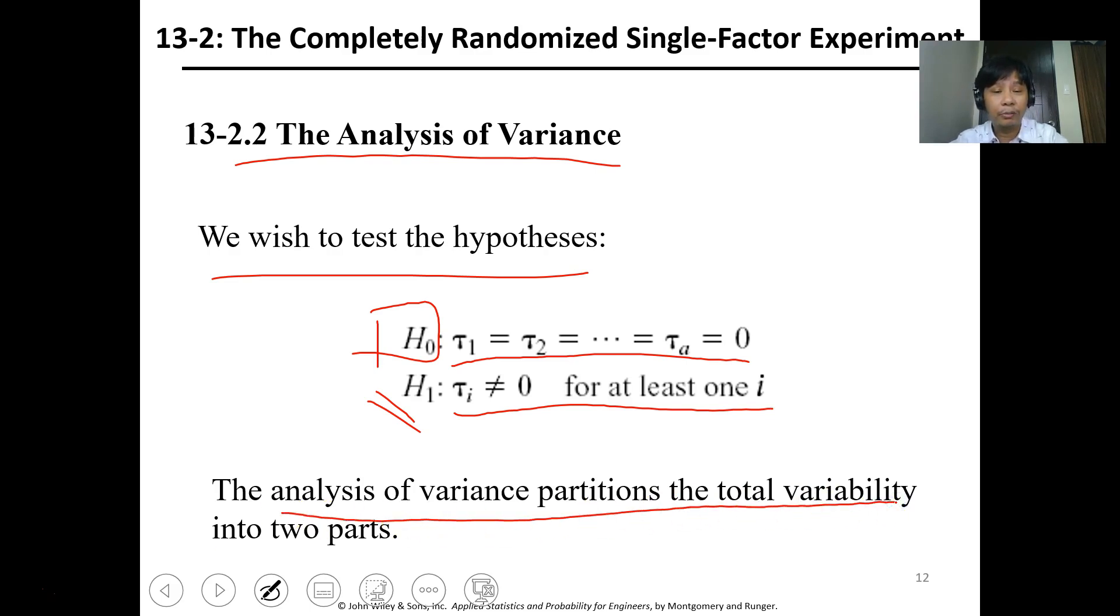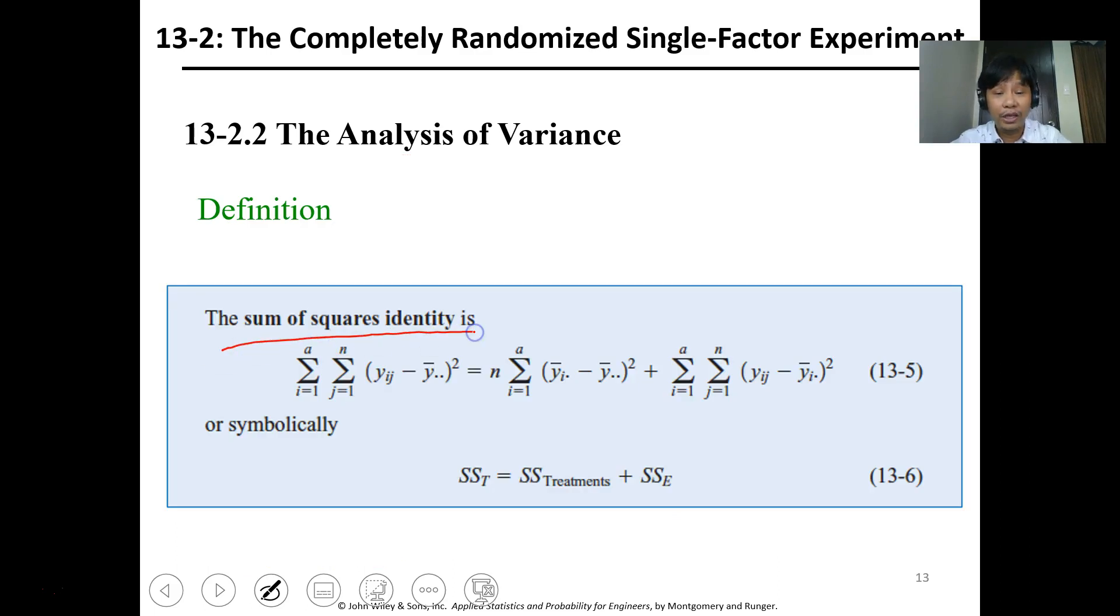The analysis of variance partitions the total variability into two parts using the sum of squares identity. This is the same as in our linear regression model. For analysis of variance, the sum of squares identity—you just get the sum of the data minus the mean, square that data, and get the sum of the squares. For each data, you get the difference, get the square, and get the sum.